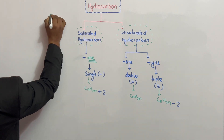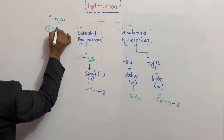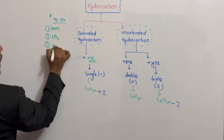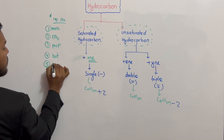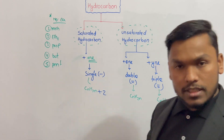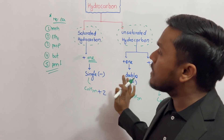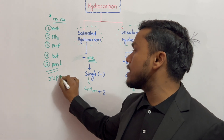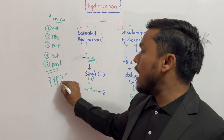The number of carbon atoms is all we need to make the naming. What is related to IUPAC? IUPAC is the International Union of Pure and Applied Chemistry.